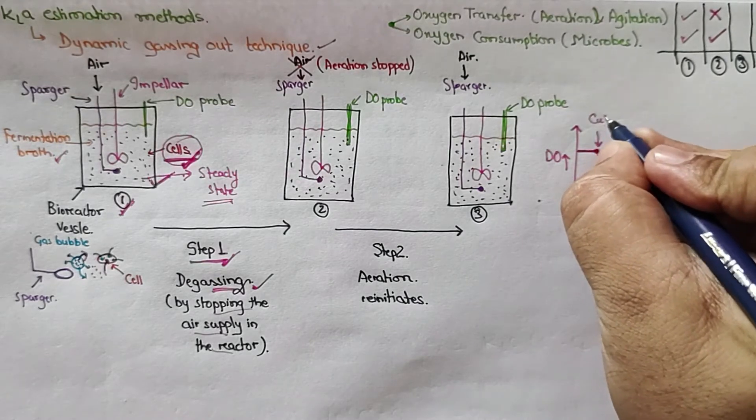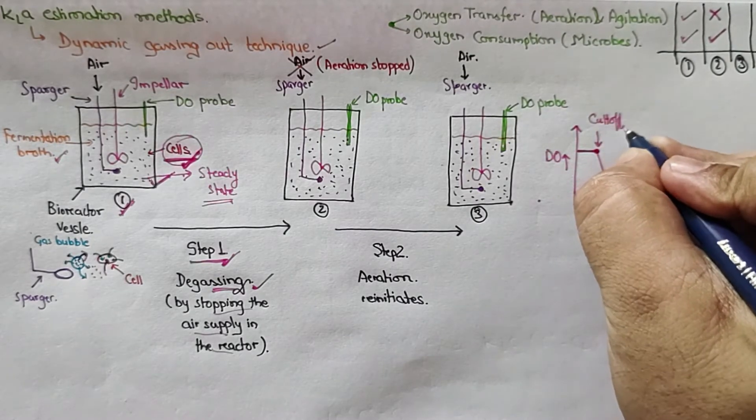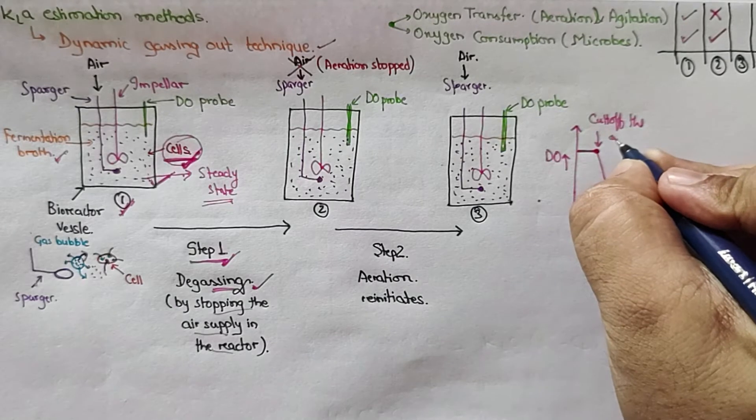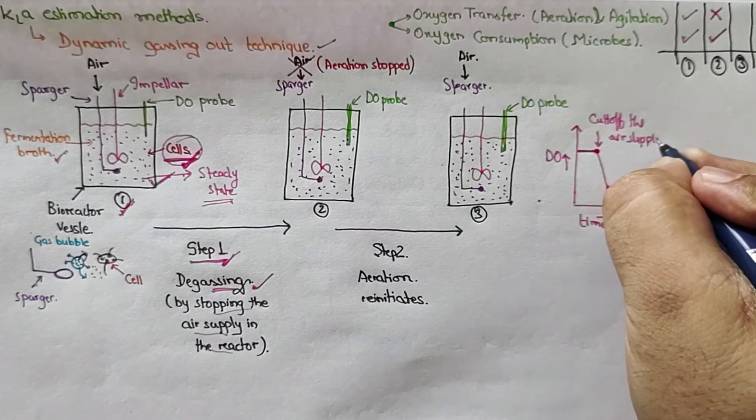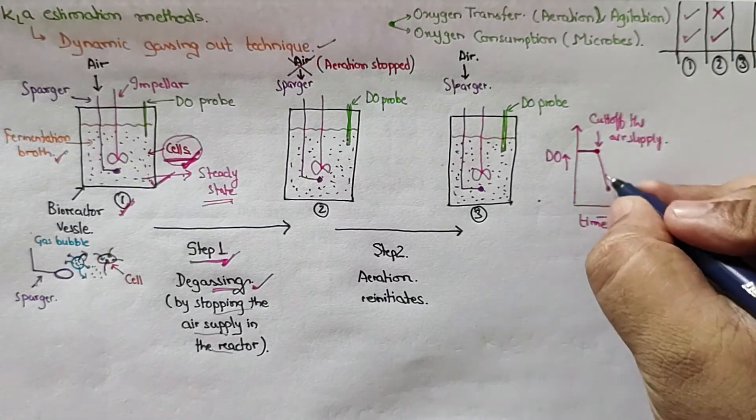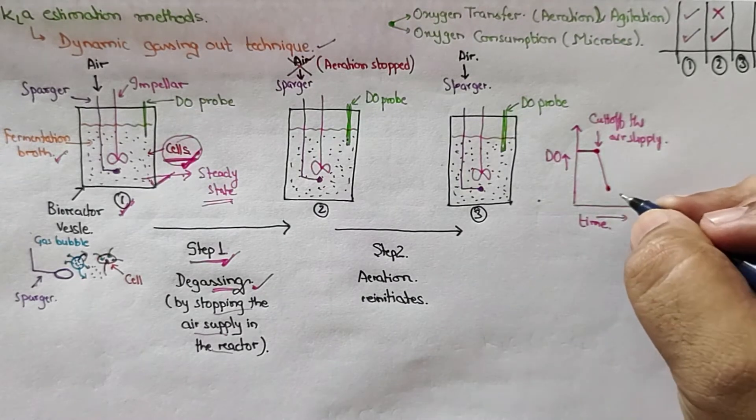At this point we will cut off the air supply, so dissolved oxygen after this starts to decrease.